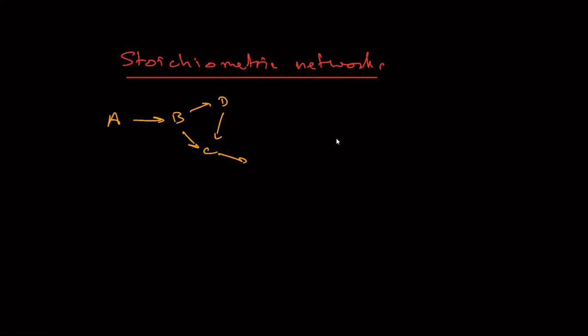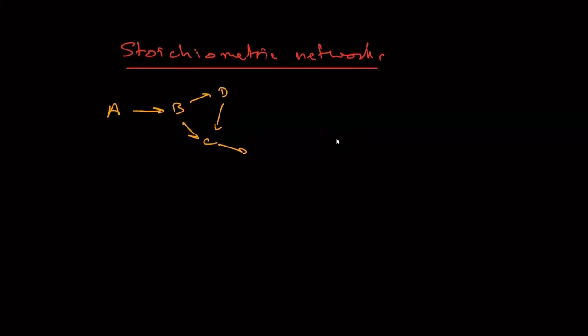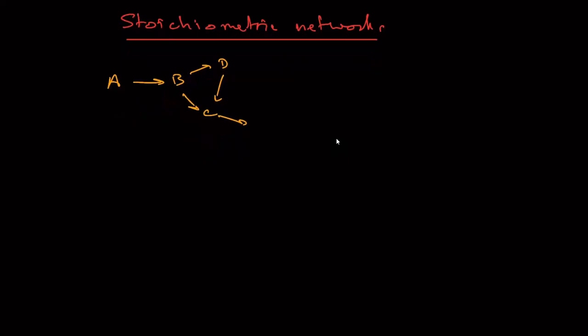Let's start with a simple example of what we might do with these stoichiometric networks. A simple network: A goes to B, goes to C. Two reactions, two reaction rates, V1 and V2. If we ran an experiment, and we measured A, B, and C, let's say we started A there, and B and C were both down here, and we let this run, let the two chemical reactions run.